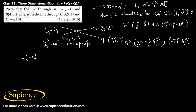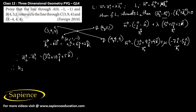Now we compute a2 minus a1. This will be: 3i cap, then 9 minus of minus 1 gives plus 10j cap, then 4 minus of minus 1 gives plus 5k cap. So a2 minus a1 equals 3i cap plus 10j cap plus 5k cap. We need to find the value of (a2 minus a1) dot (b1 cross b2).